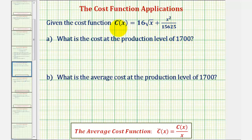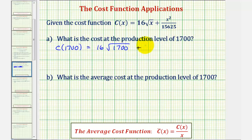To determine the total cost at the production level of 1,700, we want to find c of 1,700. So we'd have 16 times the square root of 1,700 plus 1,700 squared divided by 15,625. Now we'll go to the calculator and round this to the nearest cent.